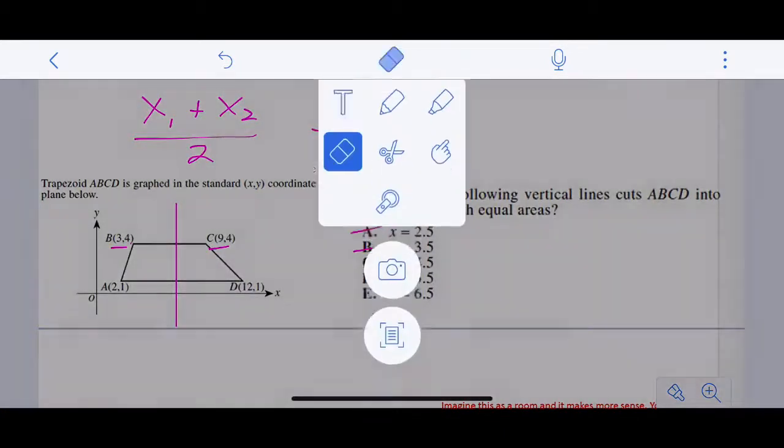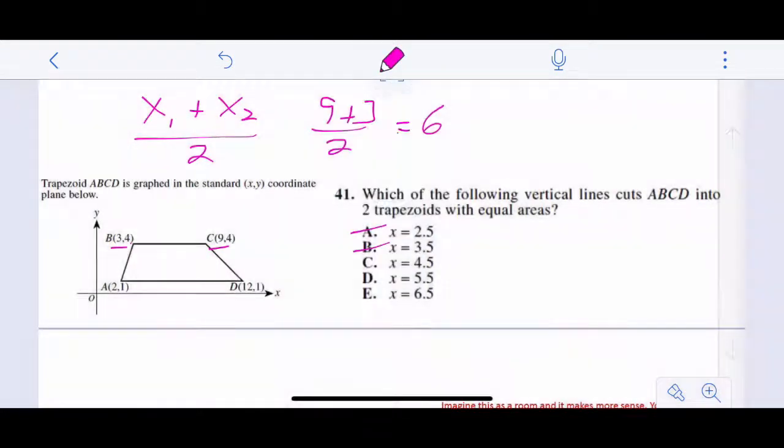And then we do the bottom line. 12 plus 2. We have 12 plus 2 divided by 2. So 14 divided by 2 is 7. So the bottom line is 7. So which one's going to cut that in half? Well, we have to take the average of these two to say it has to be between those two. So 7 plus 6 is 13 divided by 2 is 6 1⁄2. So your answer is E.